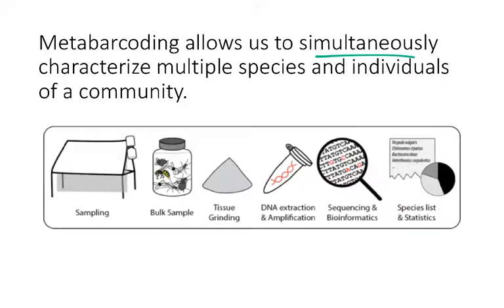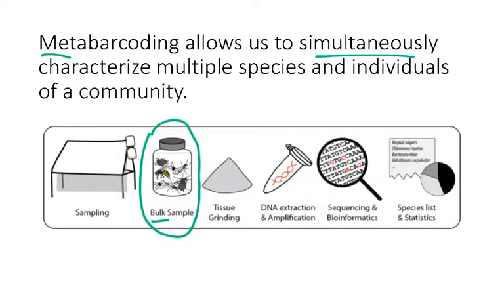Here I'm showing an overall workflow for metabarcoding. You do your sampling, and the unique characteristic of metabarcoding is that you're able to take a bulk sample. So in this example, we have a jar with several different types of flies and invertebrates in there. You can just take this bulk sample, grind everything up, and extract DNA from that sample as a whole.